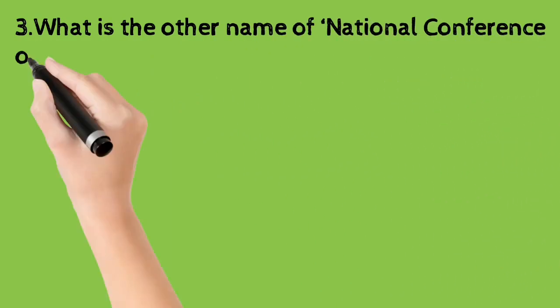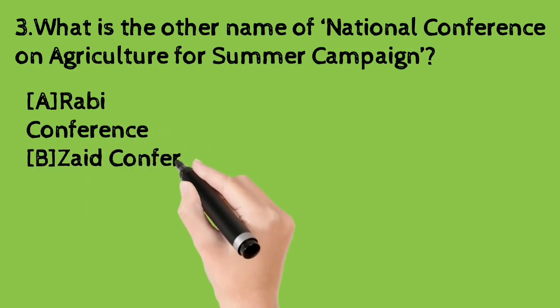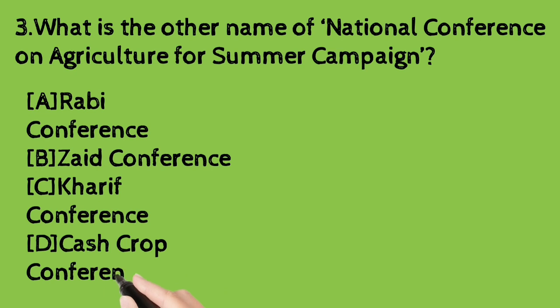The next question is: What is the other name of National Conference on Agriculture for Summer Campaign? A) Rabi Conference, B) Zaid Conference, C) Kharif Conference, D) Cash Crop Conference.